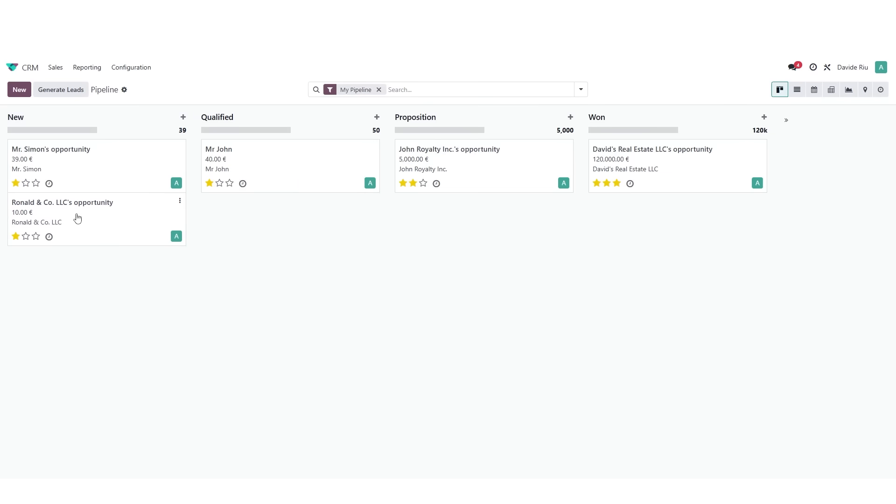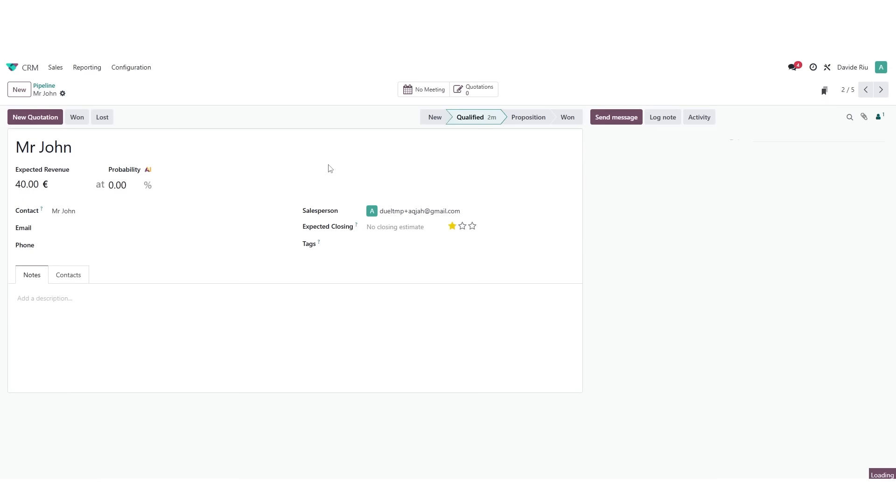Speaking of the sales app, just look at how intuitive the Kanban view is. You can simply drag and drop items through different stages. It's super easy to add details, notes, contacts, and whatever else you need.